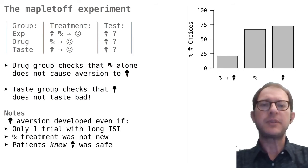It is interesting to note that the aversion to Mapletoff developed even after one single trial with a long ISI, that is a long interval between tasting the ice cream and the onset of sickness, which can take hours. We know that this is typical of taste aversion learning. What may be less obvious is that the aversion developed even in children that were old enough to understand that it was the drug to make them sick and not the ice cream. We'll talk about this point at the end of the lesson.